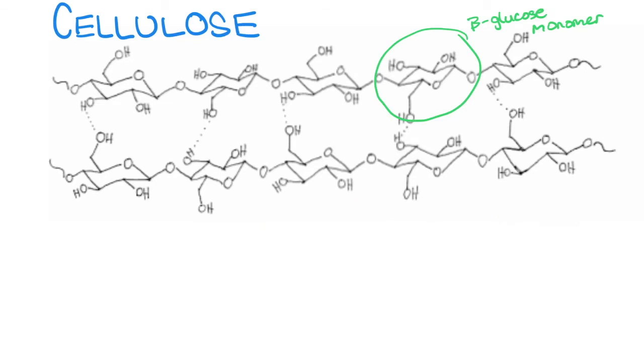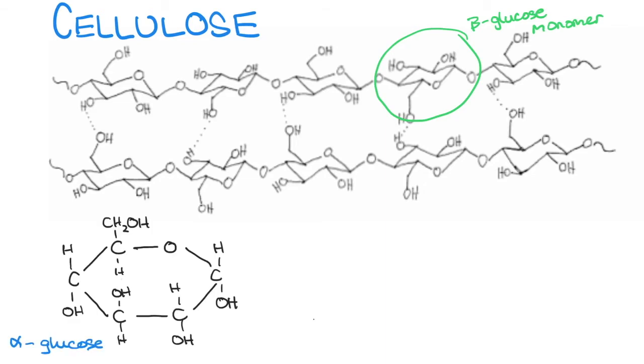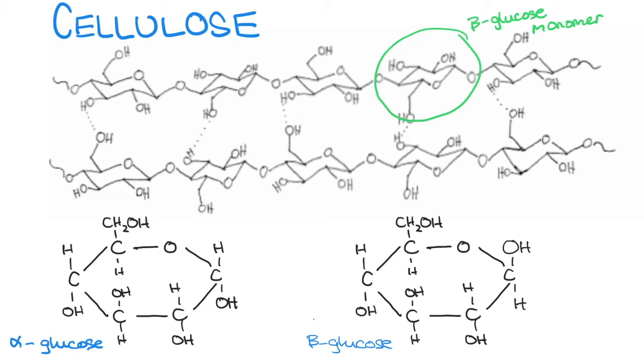There are two types of glucose monomers, alpha and beta. The structures are extremely similar with one key difference. In alpha glucose, the OH on the first carbon is at the bottom. In beta glucose, the OH is at the top.